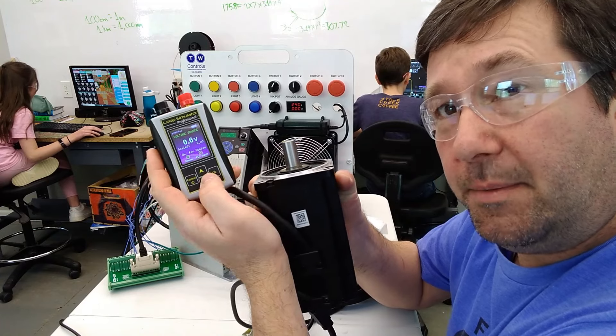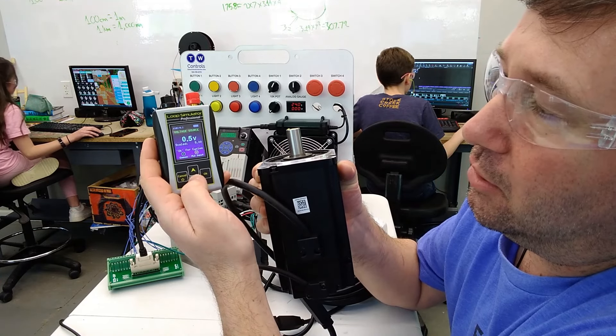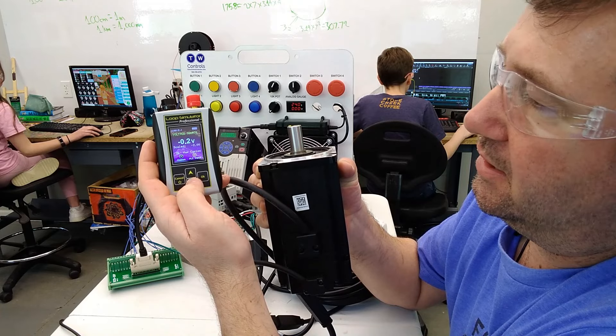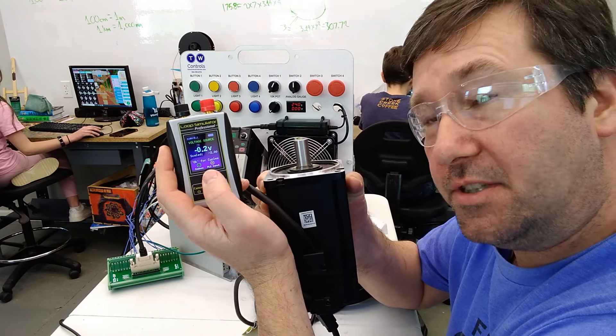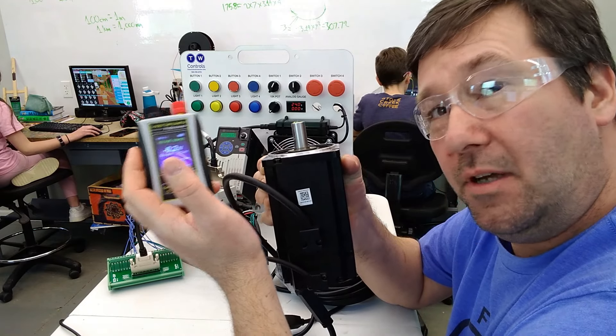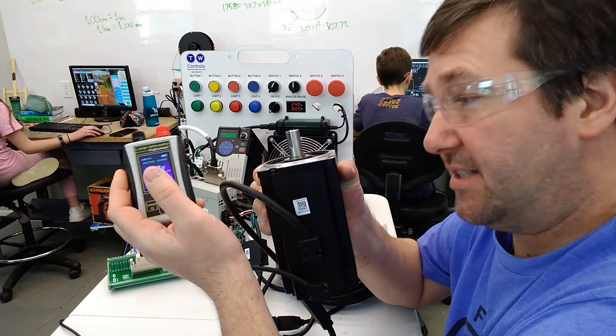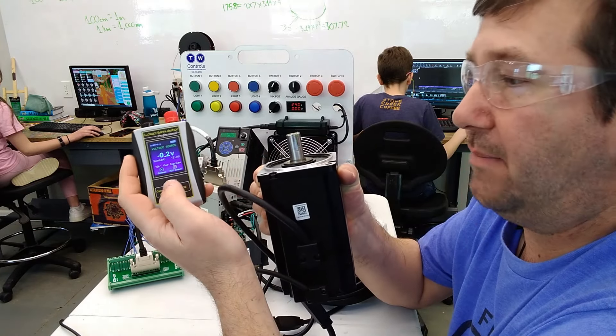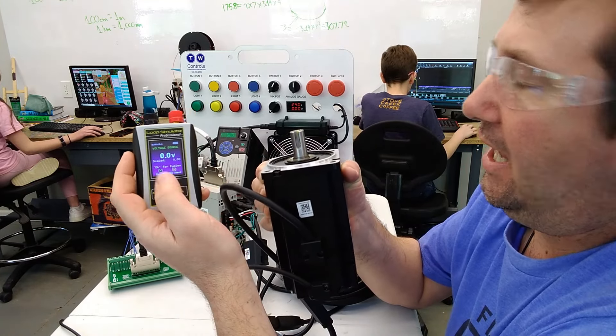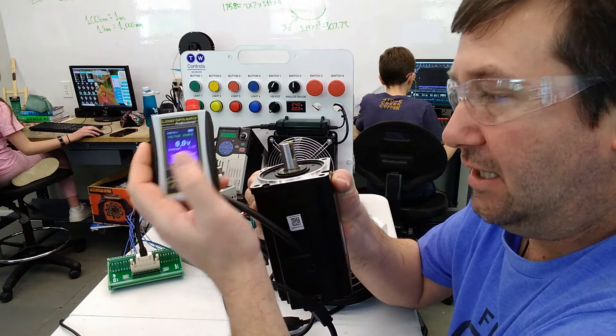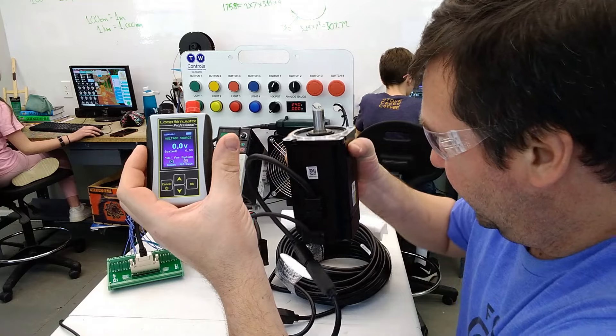On a typical servo controller, if you want to go reverse, you just run it down into the negative voltage. These commands are usually minus 10 volt to plus 10 volt. Minus 10 volt being max speed one direction, plus 10 volt being max speed the other direction. A servo controller will vary this analog signal to keep it at the precise position it wants.